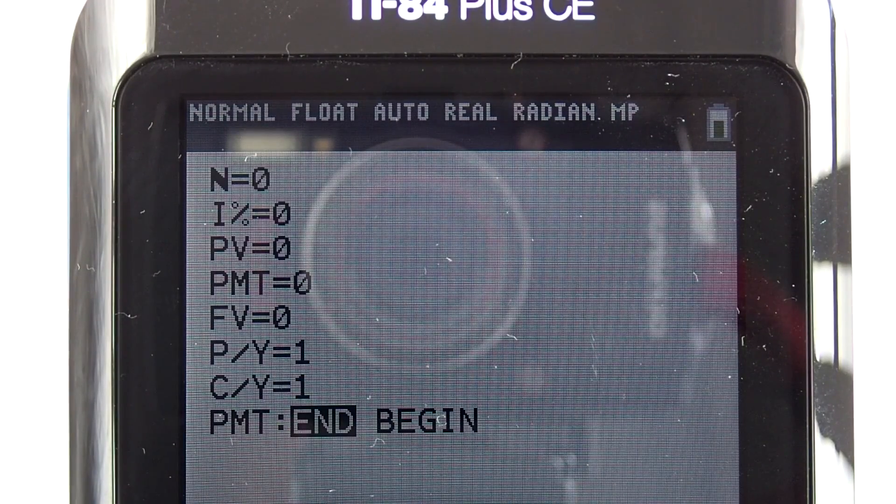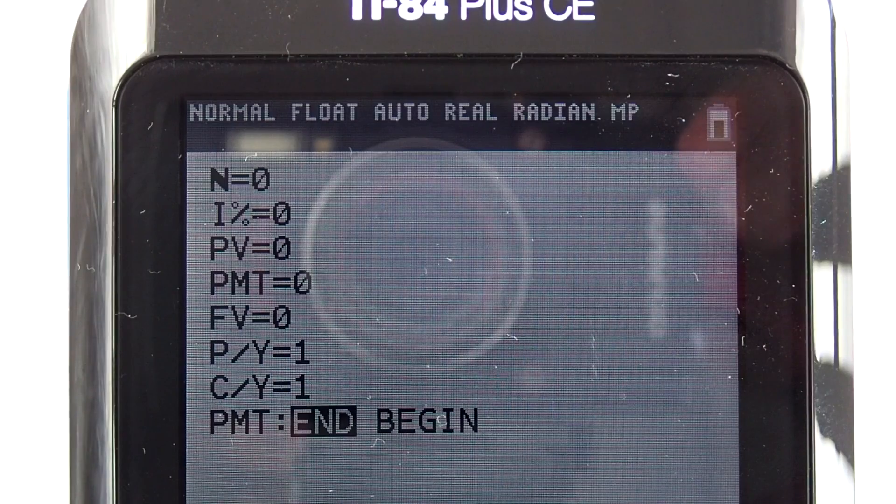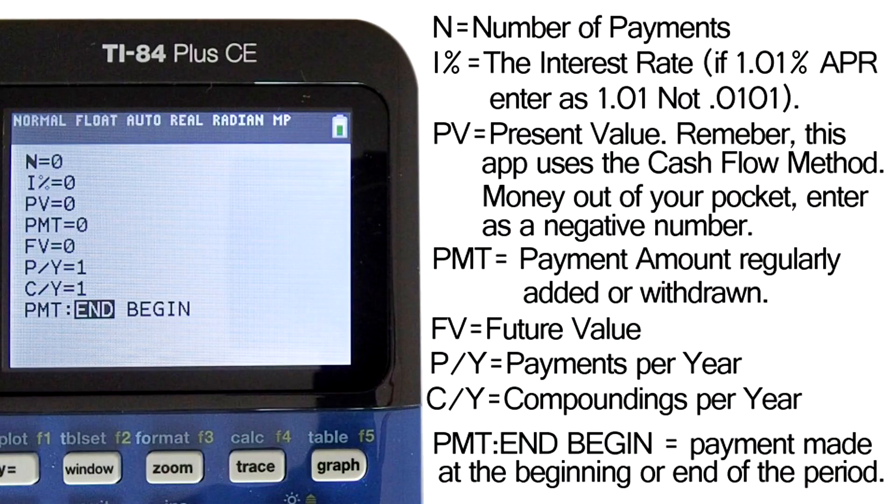These are all the time value of money variables. I will explain each one. N at the top is the number of payment periods over the entire time frame. If the time frame is 2 years then N will be the number of payment periods over those 2 years.